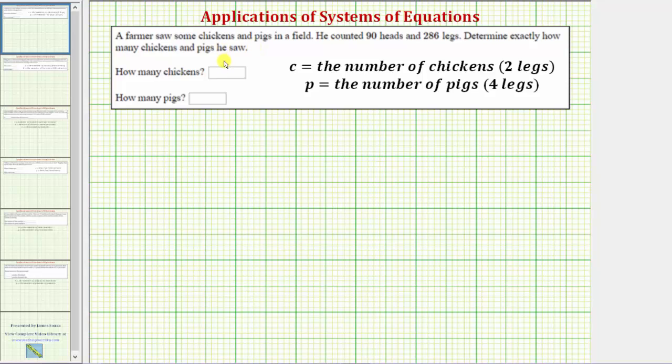We'll first define the variables to represent the unknowns. Let's let c equal the number of chickens and p equal the number of pigs.